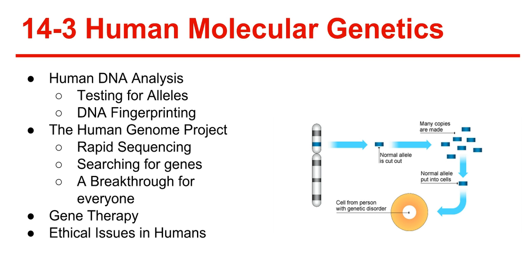Ethical issues in human genetics: people are questioning whether we should advance with it. One of the main ideas is being able to change what your children look like before they are ever born — going into the egg cell and altering their hair color, eye color, or similar physical aspects. Another ethical issue is cloning, which has long been debated in the scientific world.